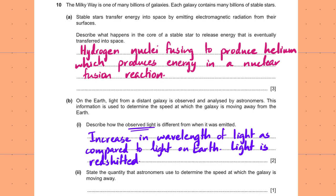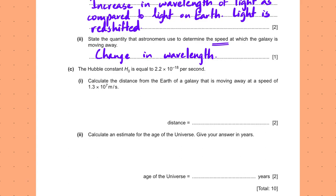State the quantity that astronomers use to determine the speed at which the galaxy is moving away. This is IGCSE-only content. The speed of recession is determined using the change in wavelength. A related popular question is how to find the distance of a galaxy — the answer is using the luminosity or brightness of certain supernovae.